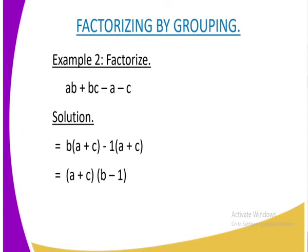Let us look at our second example. We are given ab plus bc minus a minus c. On the solution part, we are going to factor first on the first pair, that is b into brackets a plus c minus 1 is a common factor between a and c. We are going to have a plus c. Something to note is about the signs. On our previous lessons, we said that a negative sign multiplied by a negative sign, we are going to get a positive sign. A positive sign multiplied by a negative sign is a negative sign.